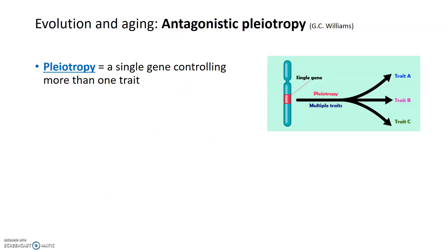One of these theories on how the negative effects of aging have remained and come to being is the idea of antagonistic pleiotropy, which was proposed by G.C. Williams. Pleiotropy is simply where one gene controls multiple phenotypes. You can see a single gene here, and it has multiple traits that it confers or multiple phenotypic outputs — one gene, many phenotypes.